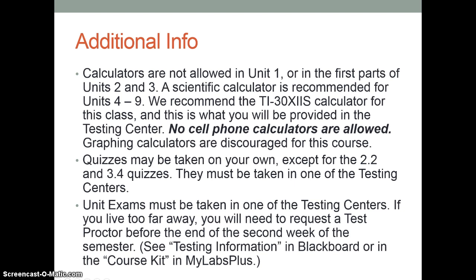No calculators are allowed for Unit 1, so you should not be using a calculator at all while working in Unit 1 so that you're prepared for the exam. The first two sections of Unit 2 and the first four sections of Unit 3 also have no calculators allowed. There's a quiz 2.2 and 3.4 that have to be taken at the testing center because no calculator is allowed. There's a calculator recommendation for a basic scientific calculator that will work for all the rest of the nine units. You'll need to go to the testing center to take your exams — one at the end of each unit, and an extra quiz for Unit 2 and Unit 3.